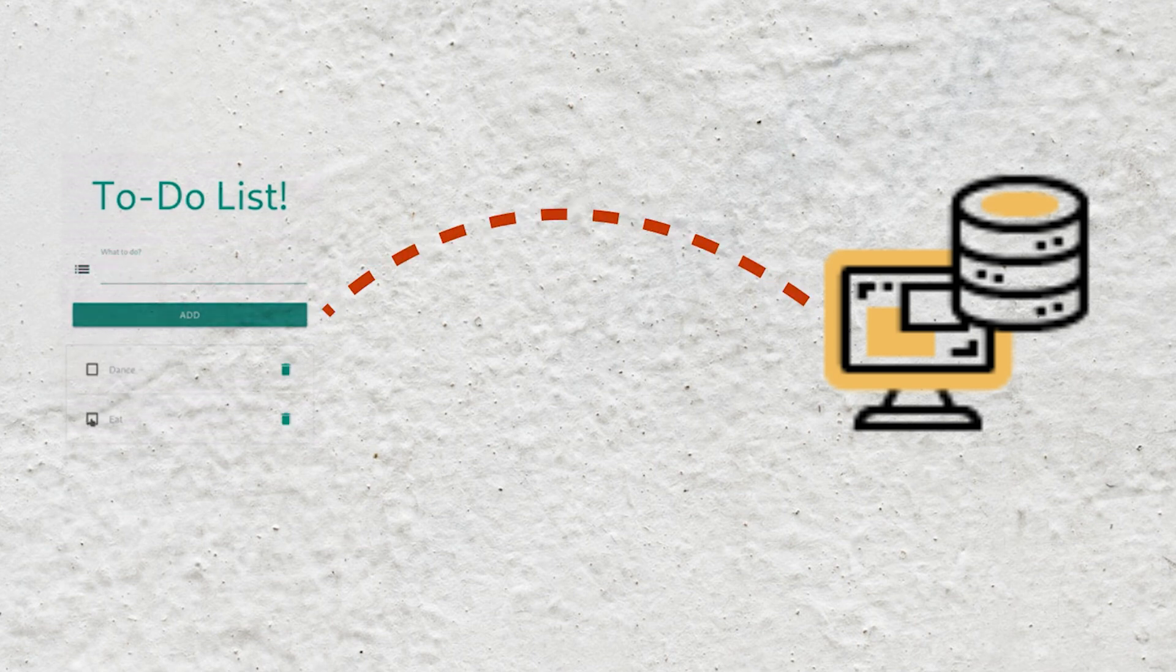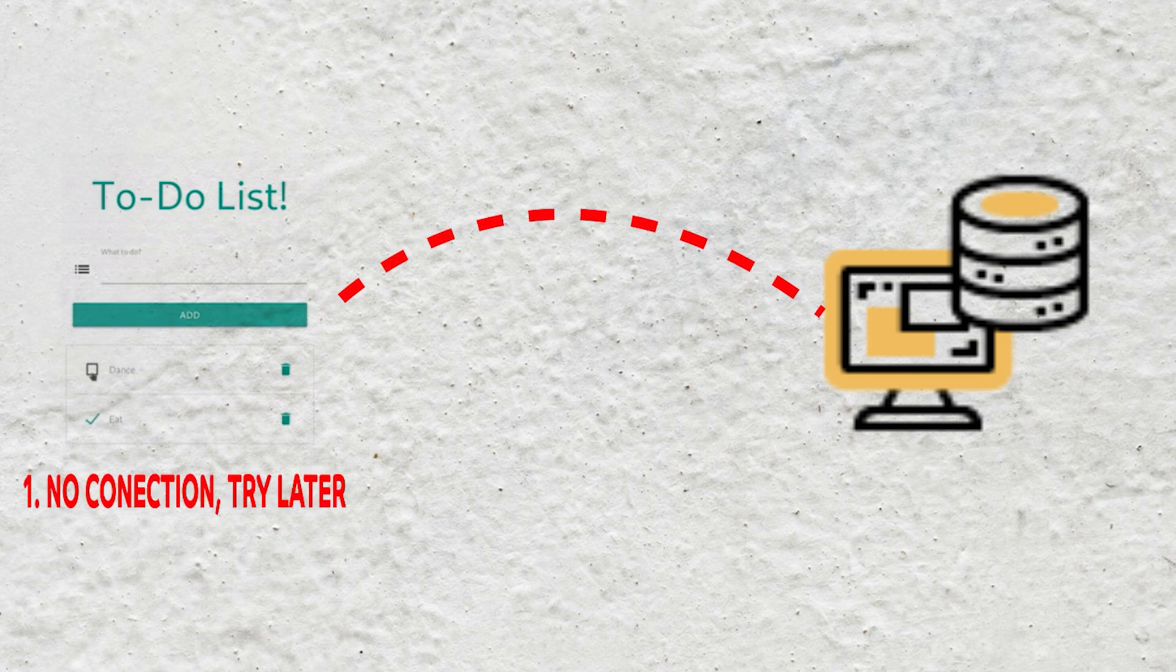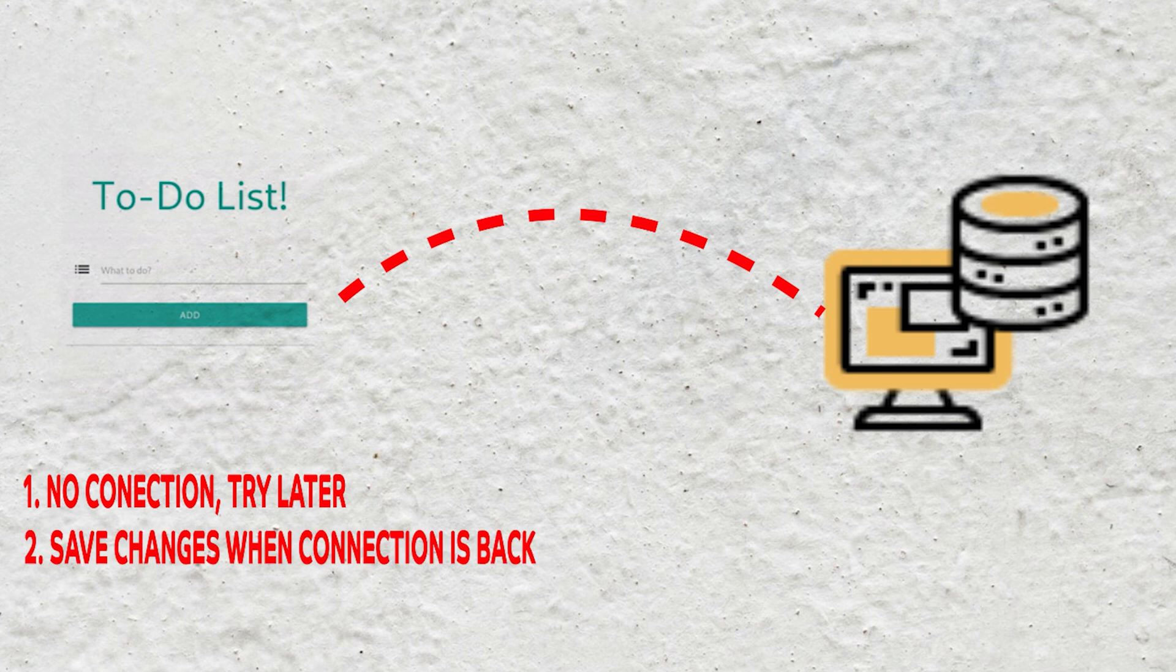Now what if your user loses network connection? You have two options. You can either tell them there is no internet connection and to try again later, or you can let them continue what they are doing, tell them the network is down and that the changes will be saved later.